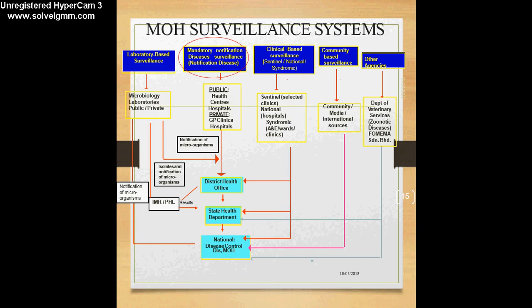In the Ministry of Health Malaysia surveillance systems, there is a system known as mandatory notification of disease surveillance. All public and private healthcare facilities — public health centers, hospitals, private GP clinics — are supposed to notify diseases to the nearest district health office, which in turn disseminates information to the state health department, and finally this information goes to the national disease control division of the Ministry of Health.